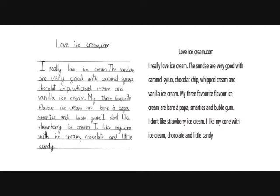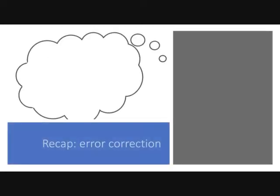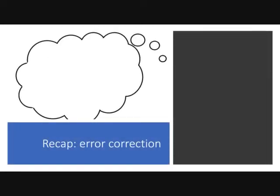If you remember, this is a text written by a grade 5 or 6 ESL student, looking at ice cream and working on vocabulary to do with flavors and all that kind of stuff. So we use this text to look at error correction — what kind of errors to correct. Let's have a quick look at that again.